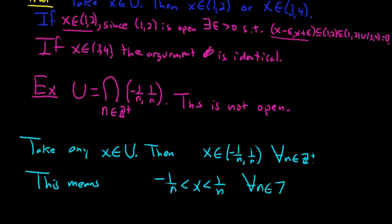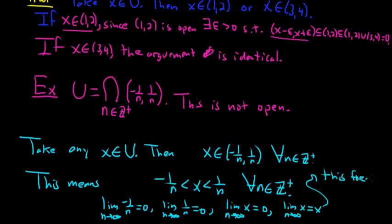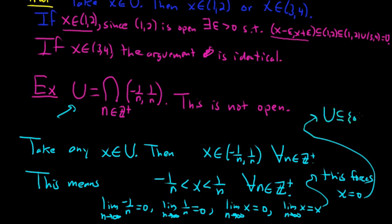You can use the squeeze theorem from calculus. The limit as n approaches infinity of negative 1 over n is 0, and the limit as n approaches infinity of 1 over n is 0. Since this holds for all positive integers n, the limit as n approaches infinity of x must be 0. But x is a constant, so that limit is just x — which forces x to equal 0. So U is contained in the set {0}, meaning U equals {0}. We proved earlier that a singleton set like {0} is not open, so this infinite intersection is not open.